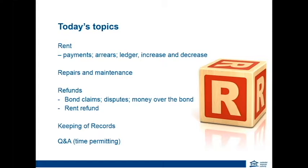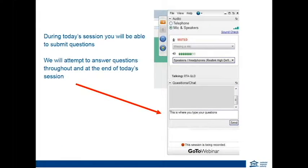To submit a question, you just need to expand the small box on your screen and type in where I've got the arrow, as a demonstration there on the screen. If I'm unable to get to your question and you do need an urgent answer, please don't hesitate to contact our call centre on 1300 366 311.